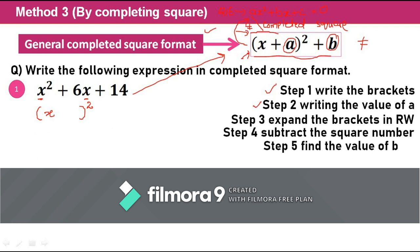Step number two: we need to find the value of a. We have to write it with the correct sign. The mid term is very important related to the value of a, so I check the sign of the mid term. It's positive, so I need to write positive here. This sign — the mid term sign that is with x — is what we write with the value of a.